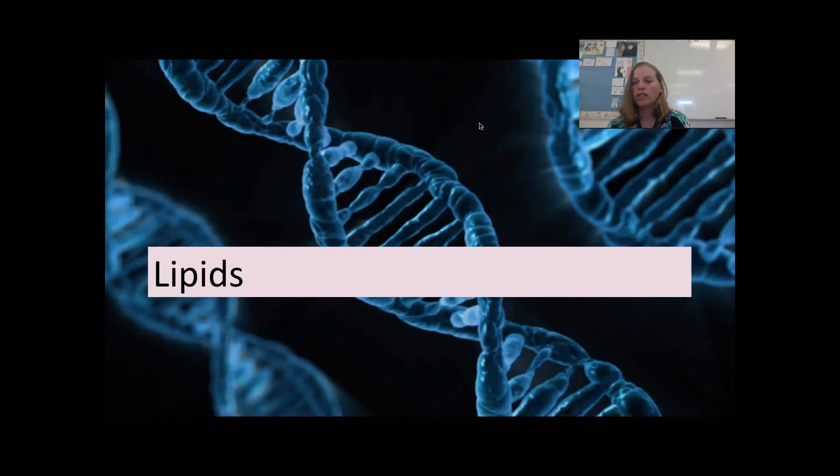Now, amino acids have some things in common. They all have this carboxyl group, COOH, and this amino group, NH2, as their functional groups. What makes them different is this R group that's going to hang off.